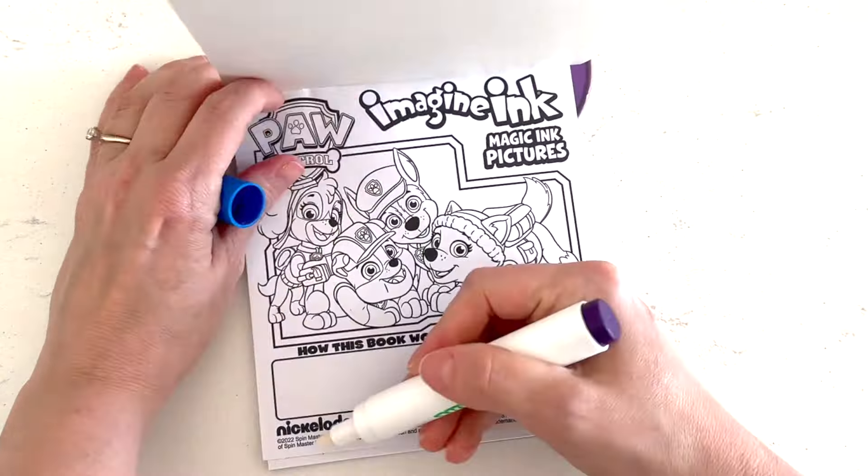Look how cute the pups are. We have Skye, Rubble, Chase, and Everest. Next page. Color in the picture. Only one of the puzzle pieces below will fit. Can you find the missing piece to complete the picture? Okay, let's color in the picture first.